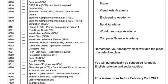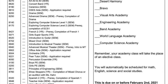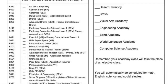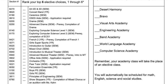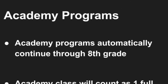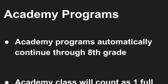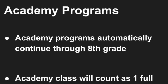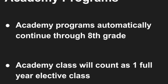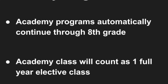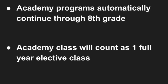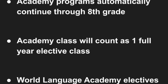You will need to rank order your top six elective choices. Place a number one next to your top choice and number down from there. If you are currently in an Academy program, you will automatically continue in that program — you do not need to reapply. Your Academy class will count as one full-year elective class for 8th grade.